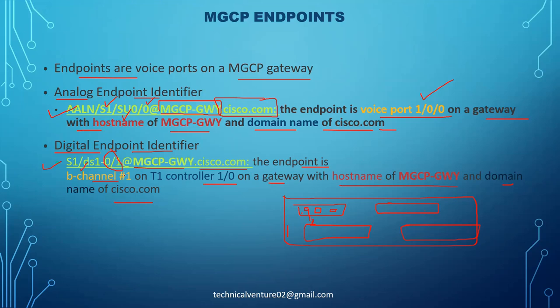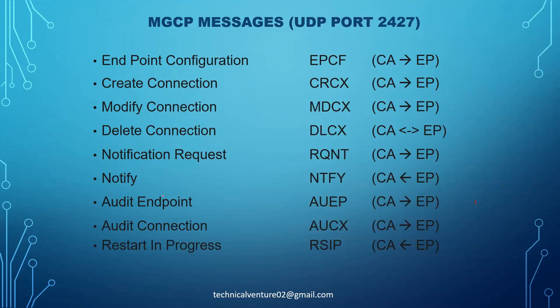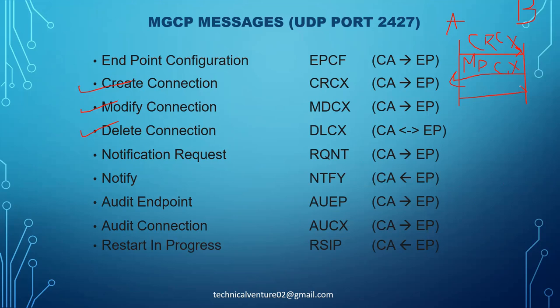Now let's look at MGCP messages. Mainly we have three messages: Create Connection, Modify Connection, and Delete Connection. In a normal call, phone A initiates the request — that is Create Connection (CRCX) — then phone B responds with Modify Connection (MDCX), and then if phone A wants to disconnect it sends Delete Connection (DLCX). There are other messages as well: endpoint configuration, notify, notification request, audit endpoint, audit connection, and restarting.